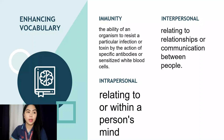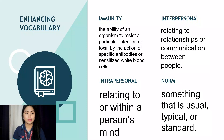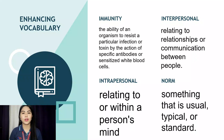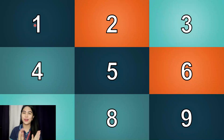The next word is Norm. Norm is something that is usual, typical, or standard — an accepted standard or a way of being or doing things. It is what we do normally. So the four words are: Immunity, Intrapersonal, Interpersonal, and Norm. These are some of the words we are going to encounter in our lesson today.